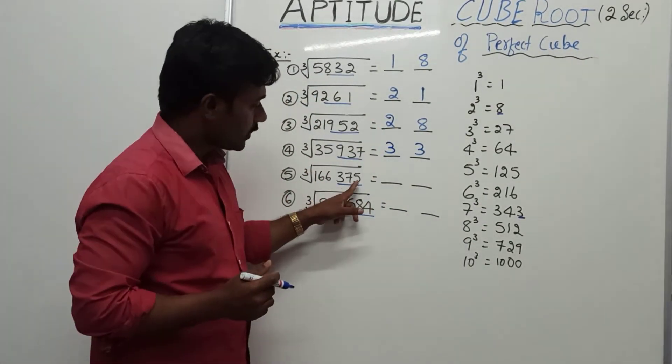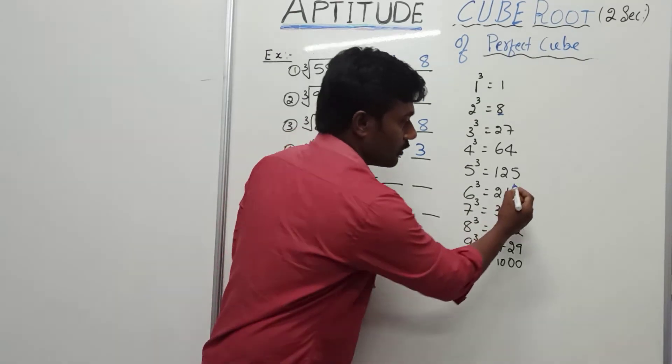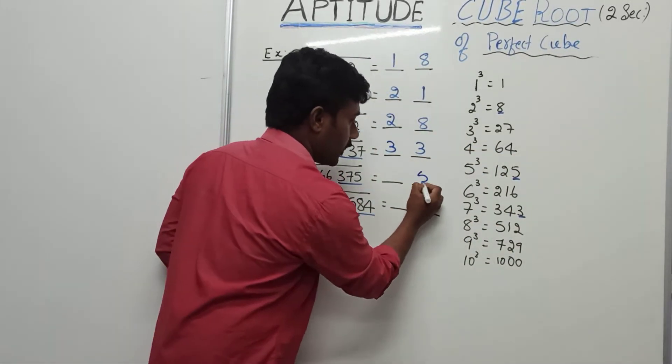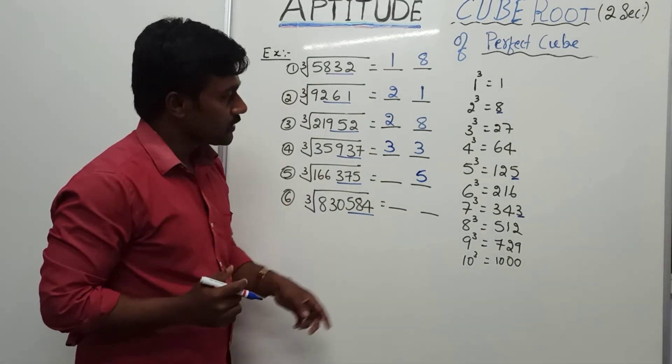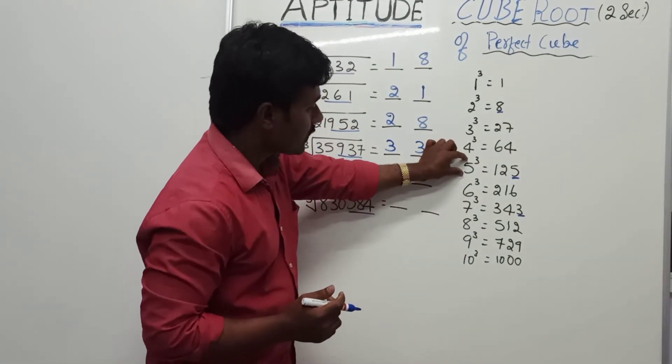Then here, 5. Cube of 5. The unit digit of the cube of 5 is 5 itself. Write it here. Then, 166 lies between 5 cube and 6 cube. The minimum base is 5.